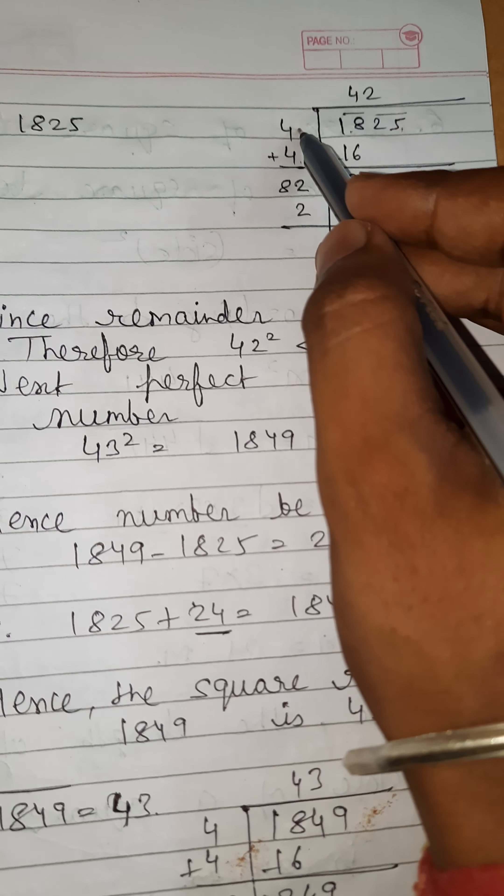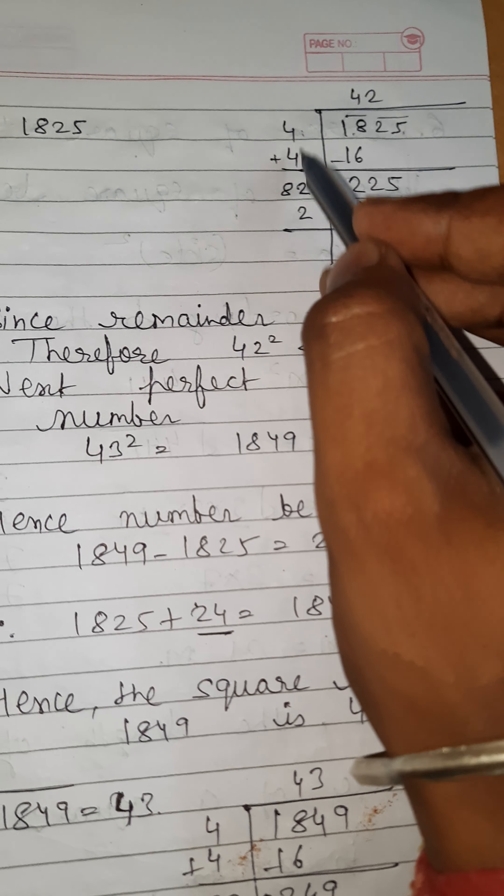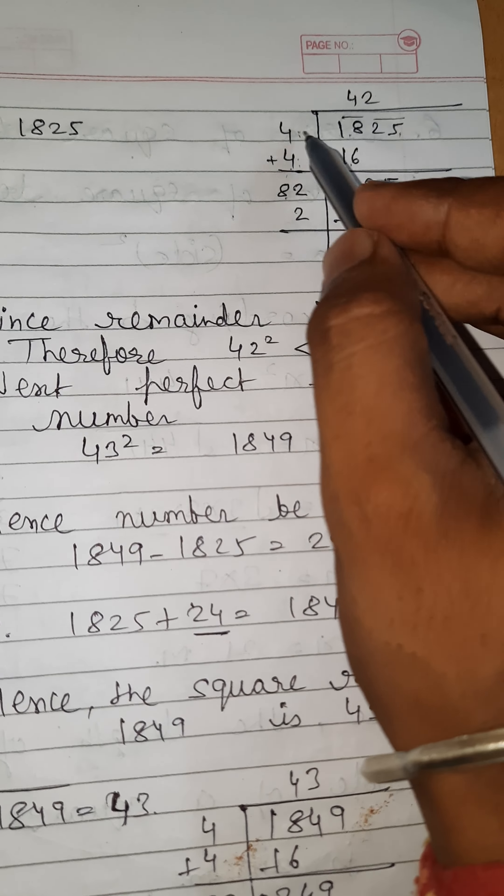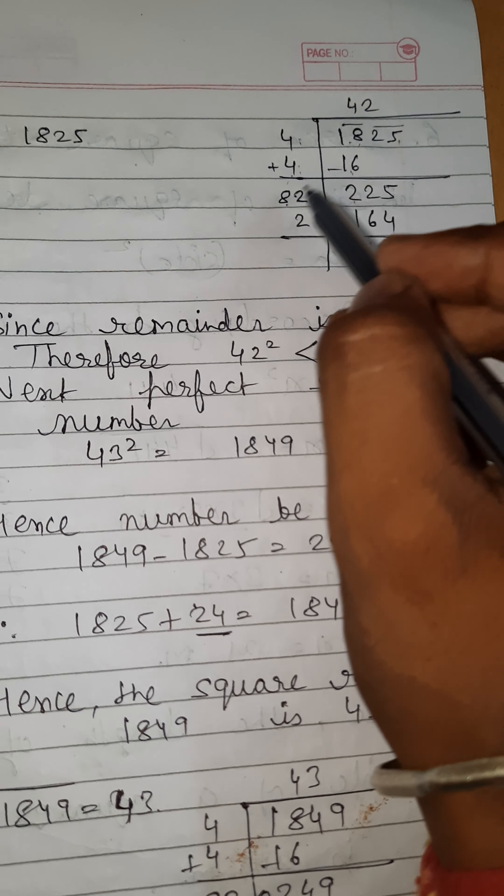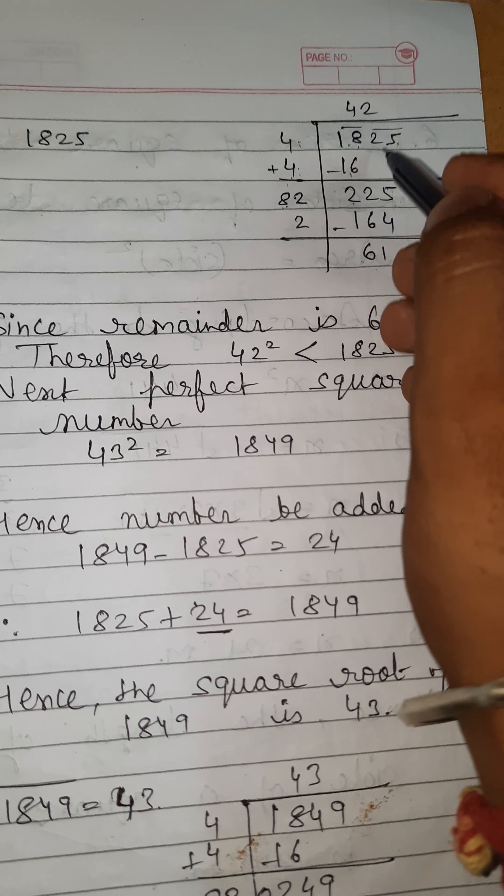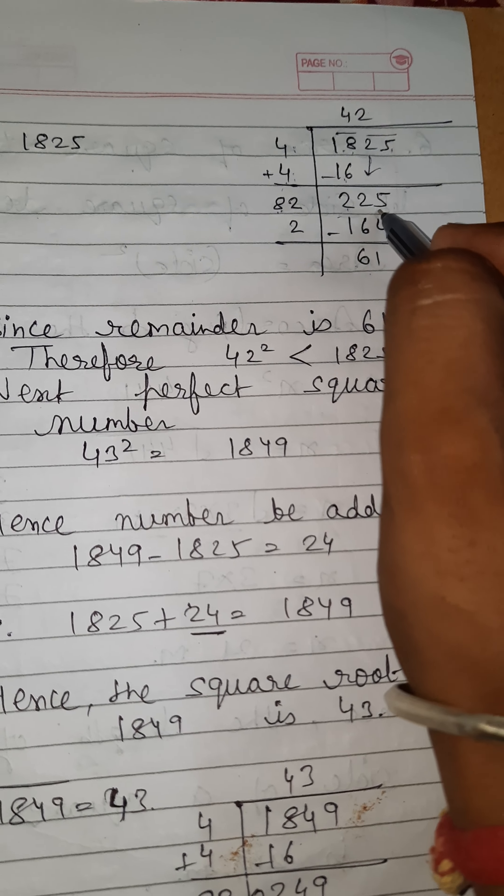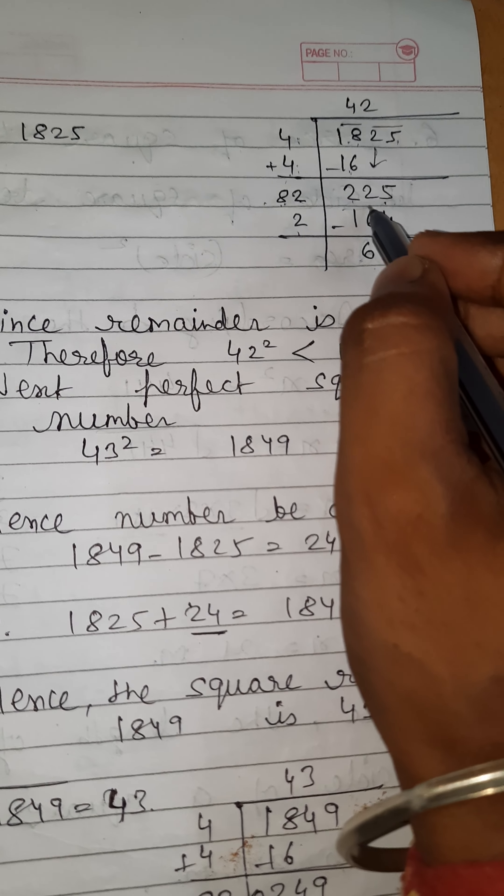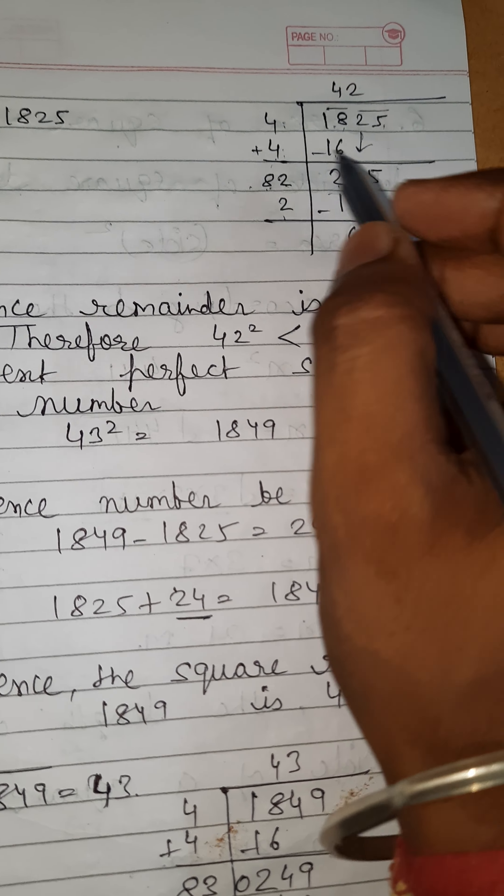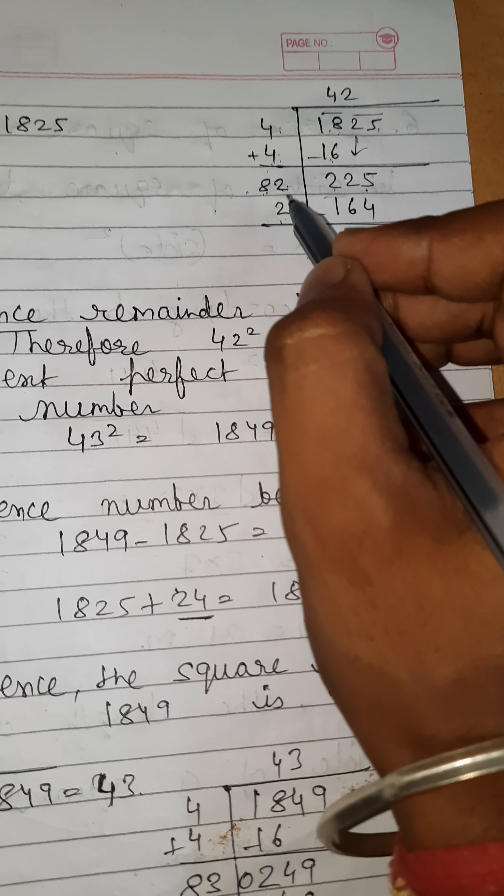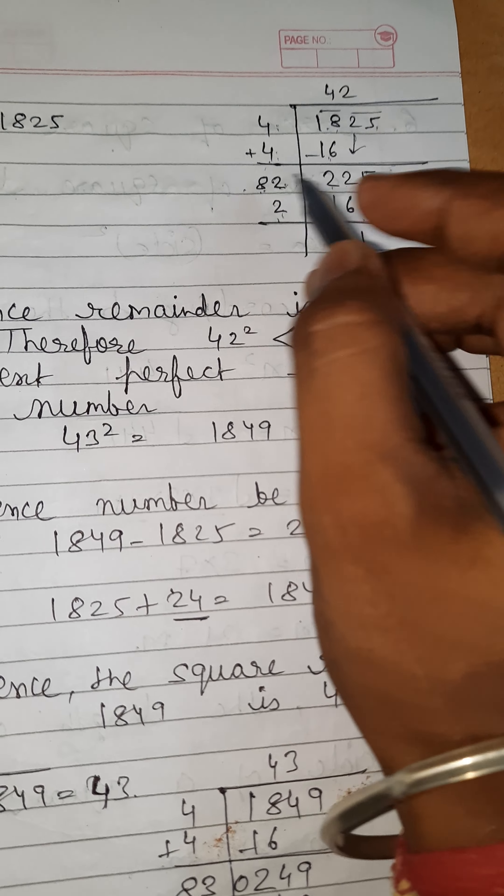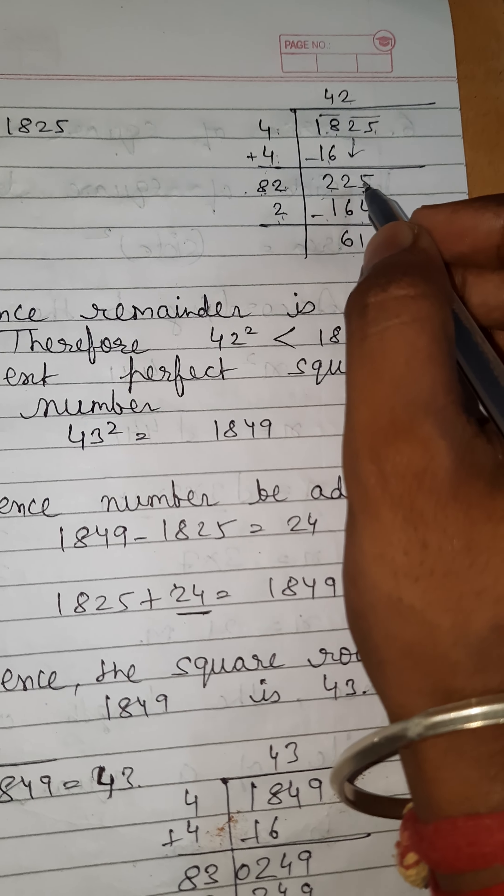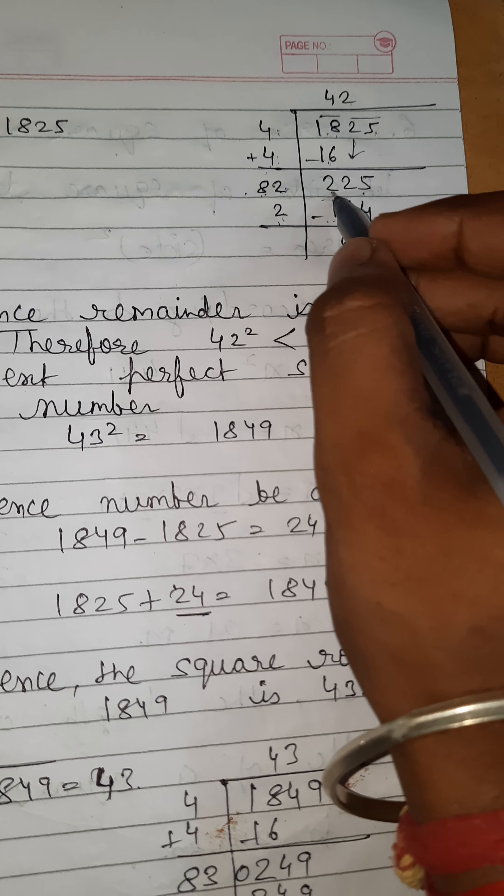Put 4 times 4 equals 16, and 4 plus 4 equals 8. Now 18 minus 16 is 2, and 25 brought down becomes 225. If you put 3 here, then 83 times 3 is 249, which is greater than 225. So we put 2 here and here.